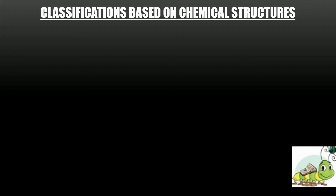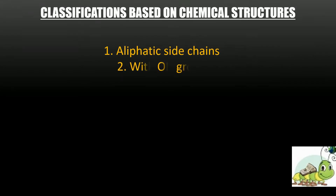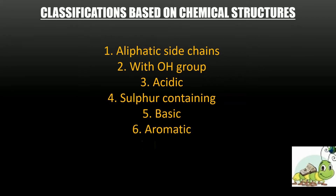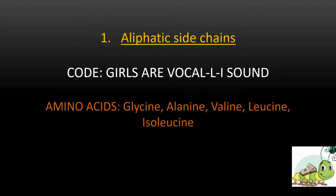Amino acids can be classified based on structure into 7 types: 1) Aliphatic sidechains, 2) With OH group, 3) Acidic, 4) Sulfur-containing, 5) Basic, 6) Aromatic, 7) Imino. For aliphatic sidechains, remember: 'Girls are vocally sound' — meaning Glycine, Alanine, Valine, Leucine.